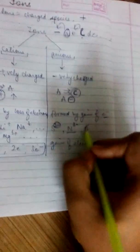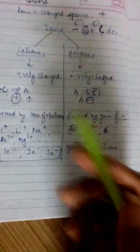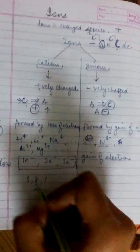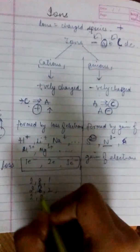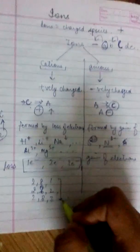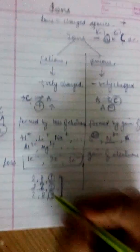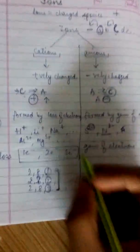You might be thinking, why cations lose and why anions gain? So the cations, they are having 2, 8, 1, 2, 8, 2, 2, 8, 3, and like this. I mean they have 1, 2, and 3 valence electrons. So that is the reason they lose electrons.